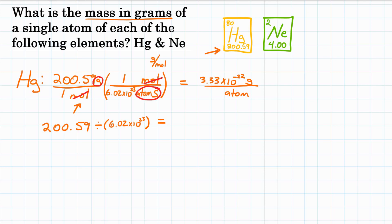Okay, let's do neon. So for neon, again, we're going to look at the periodic table and see that for 4.00 grams, that is 1 mole. So we're going to put that over 1 mole. This is our molar mass that we're starting with. And we want to end up with grams over atoms.